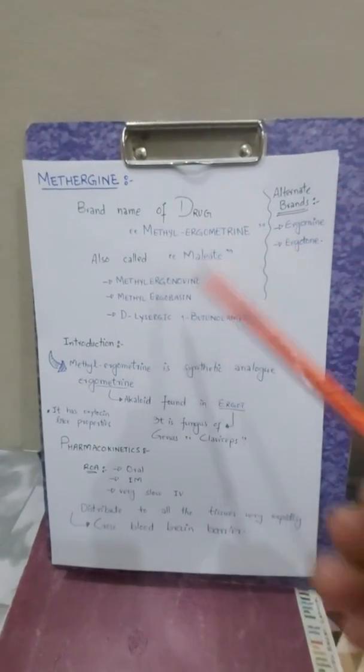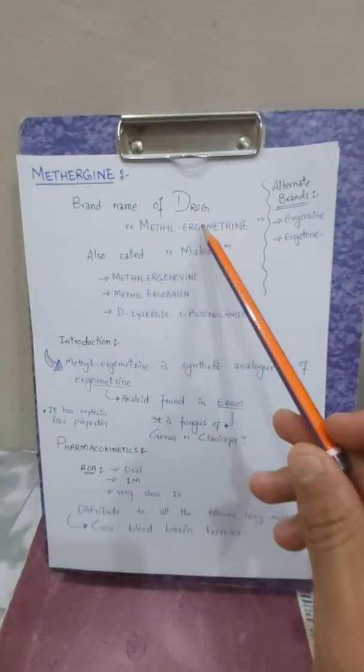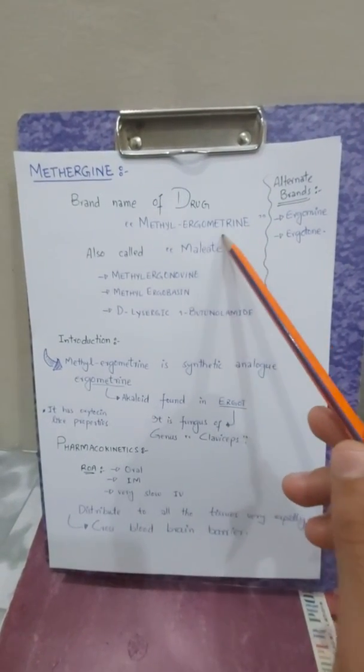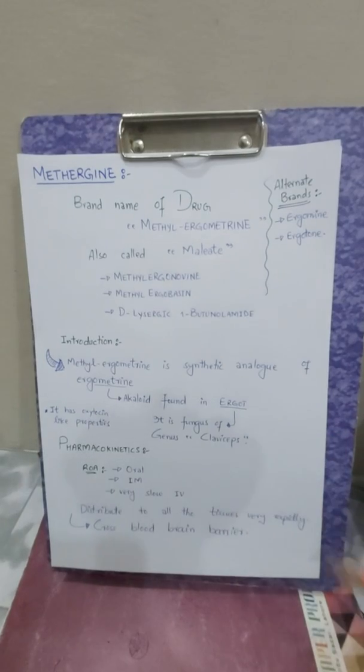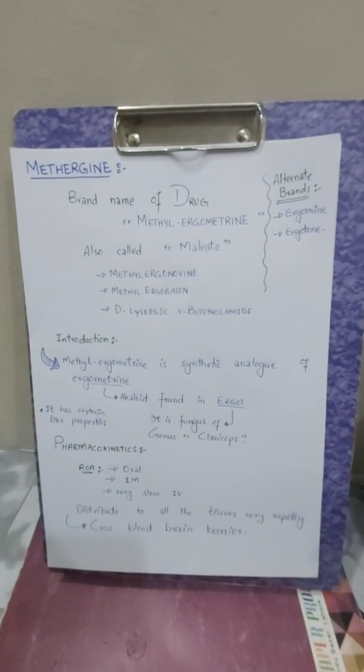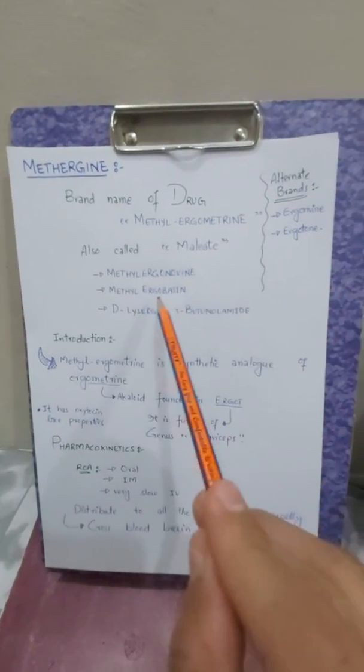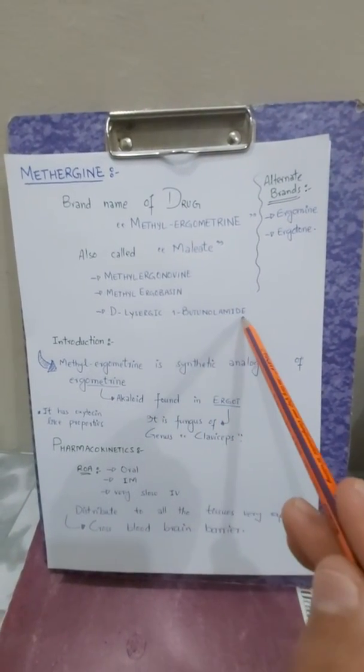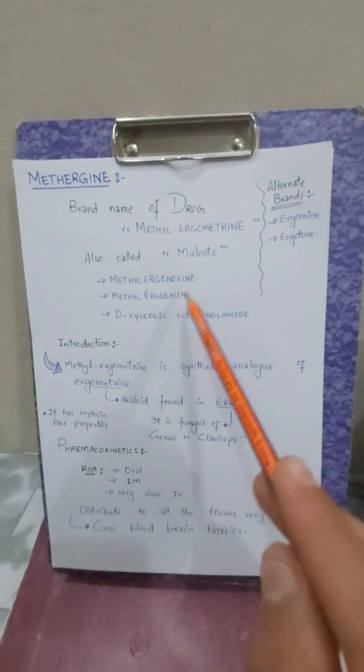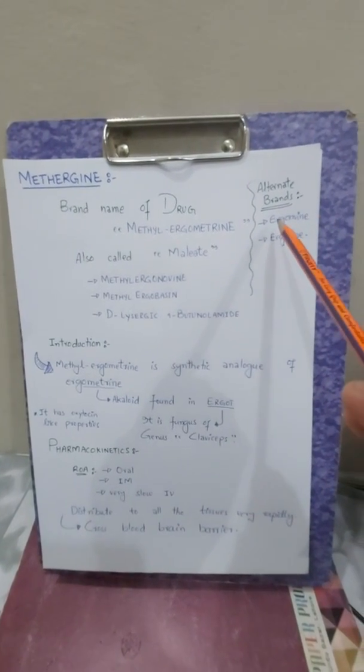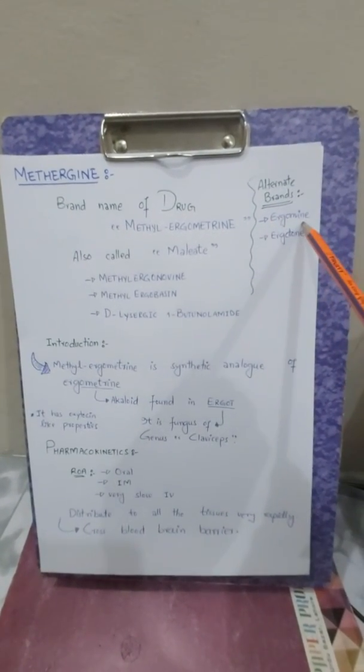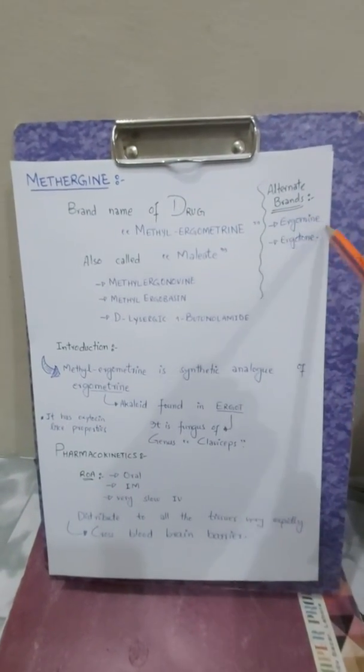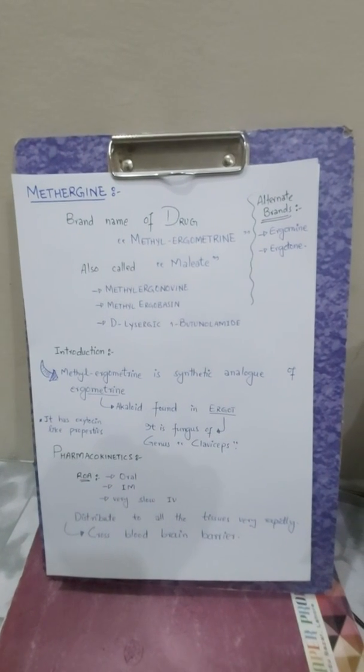Methergine is a brand name of a drug containing methylergometrine, also called maleate, methylergonovine, methylergobasine, and D-lysergic-1-butenolamide. Alternate brands of this drug are Ergometrine and Ergotrate.